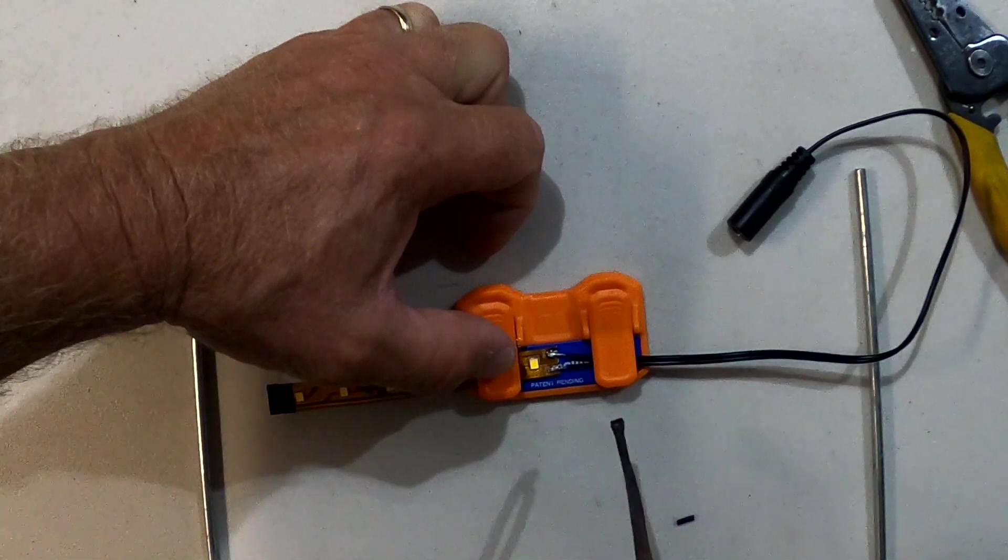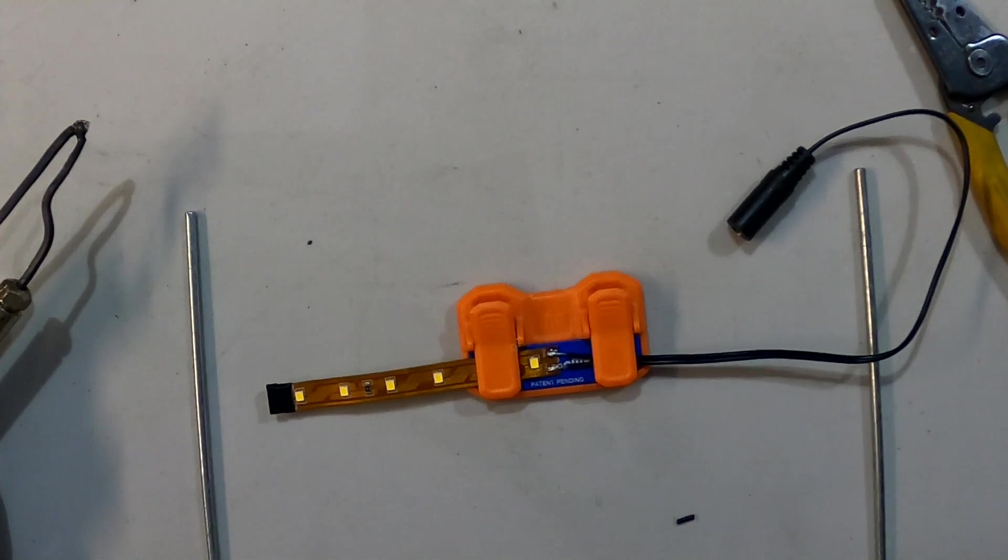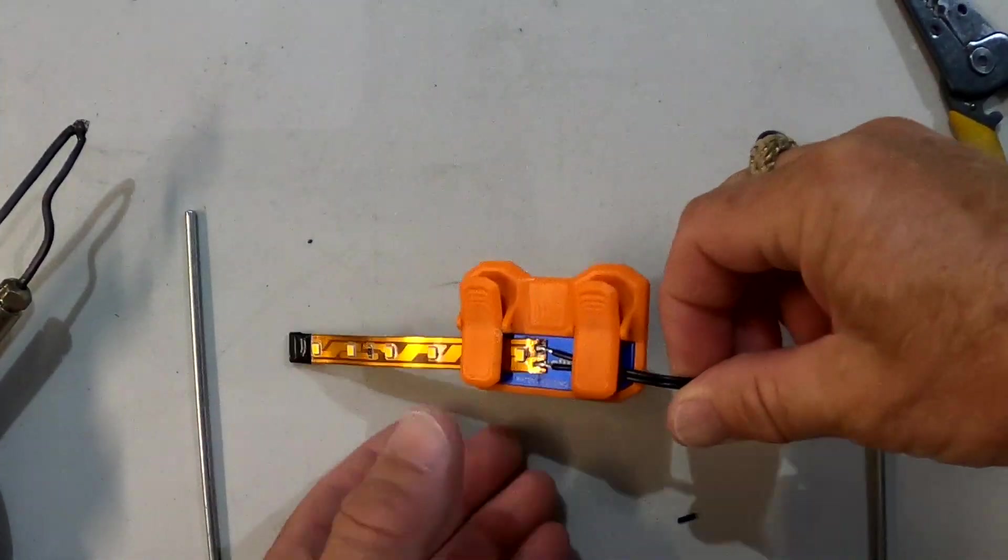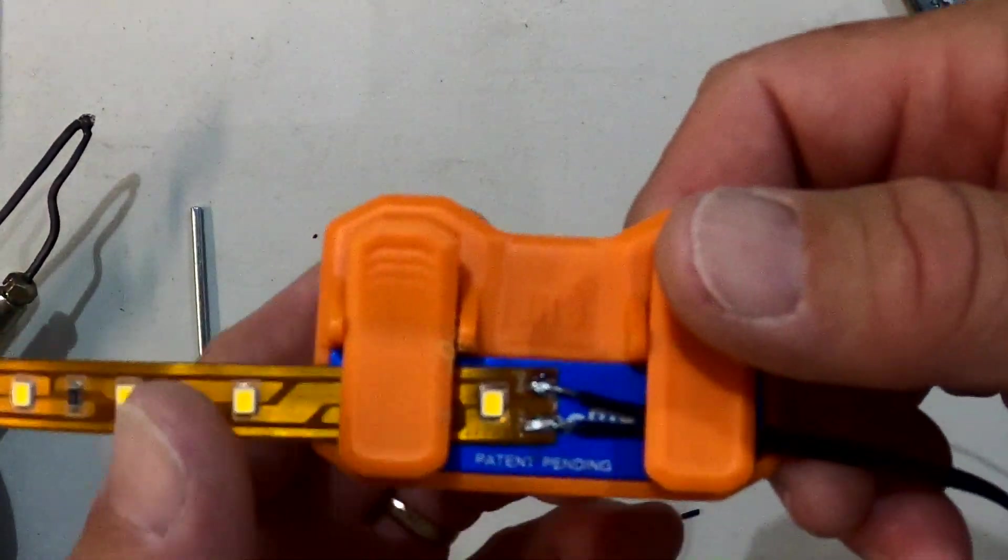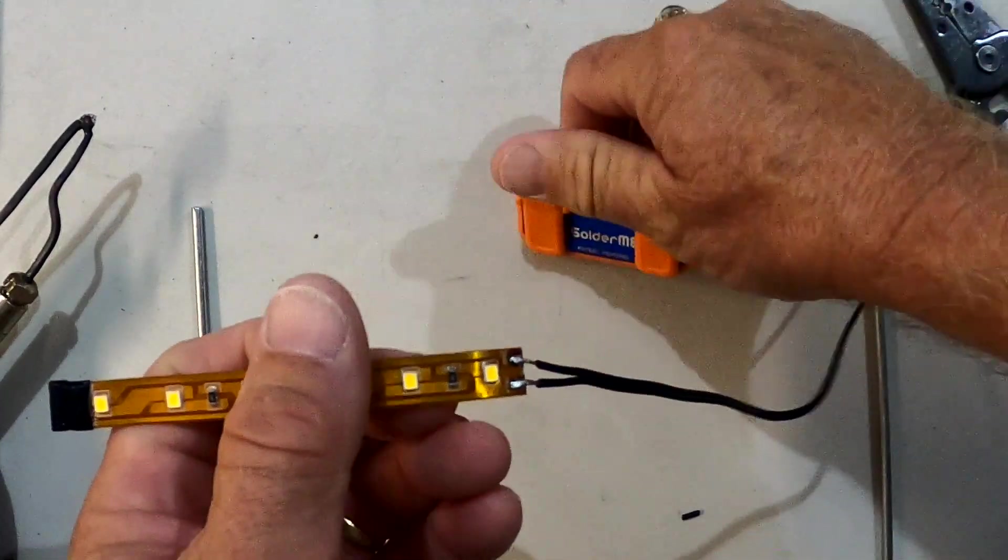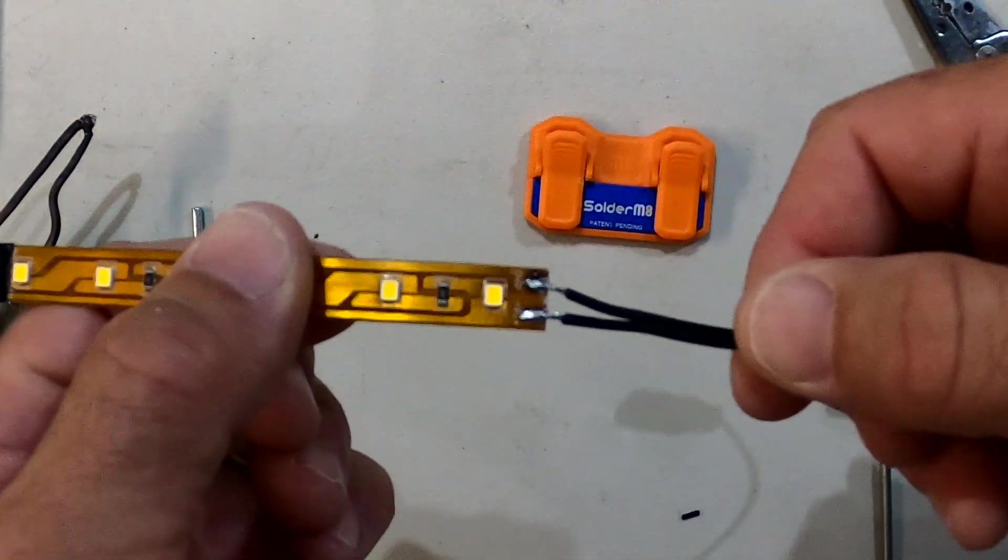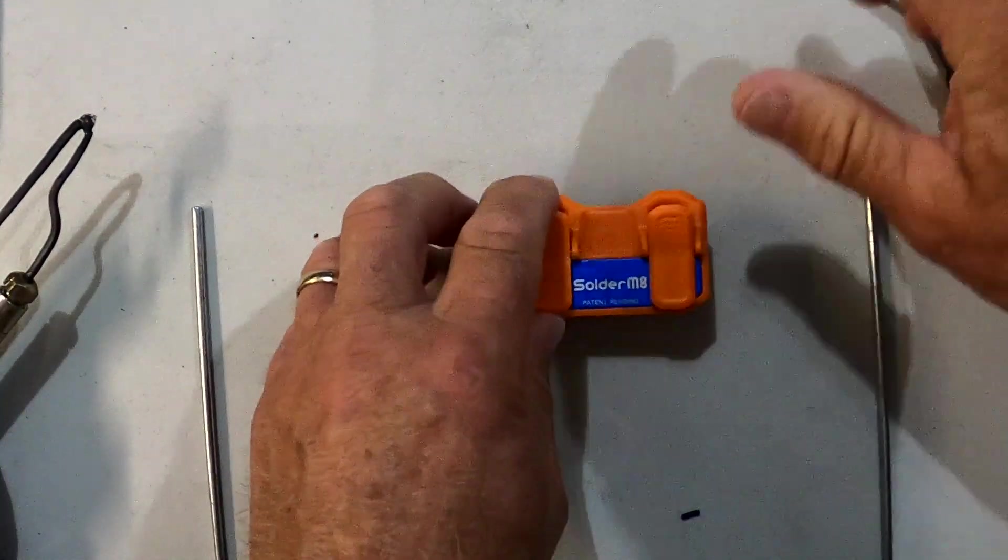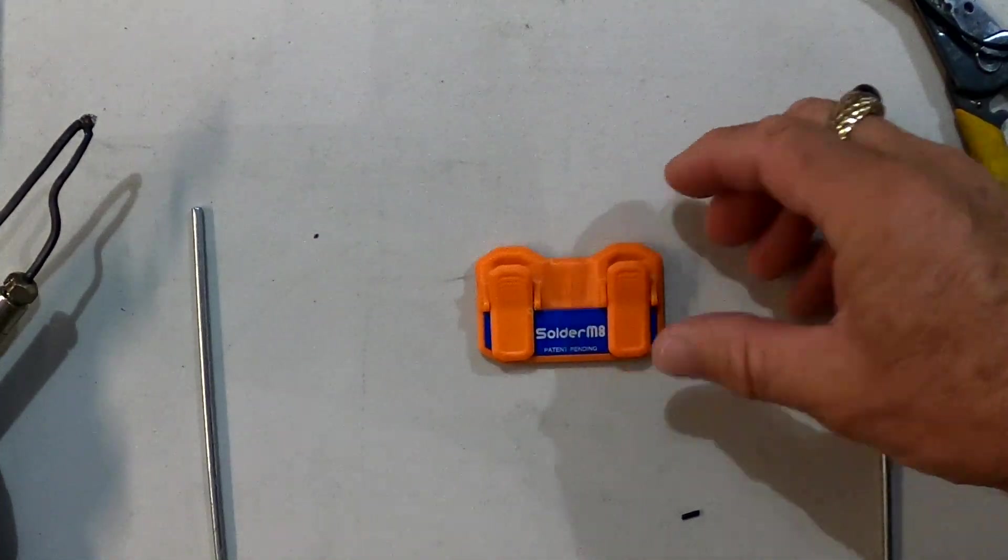The solder from the wire and the solder from the terminal all melding into one. Let that cool a bit. Now you can see we got a good joint. Test it by releasing it from the Solder Mate - there you got a good connection. That just sold me on the value of this tool for soldering, especially an LED tape job like that.